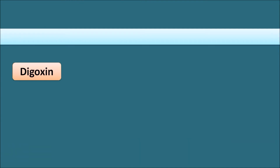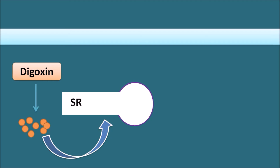Now, at the cellular level, Digoxin increases intracellular calcium levels through inhibition of the sodium-potassium ATPase pump. These calcium ions are stored in the sarcoplasmic reticulum, which acts as a calcium storage site within the cardiac cell. The sarcoplasmic reticulum is equipped with ryanodine receptors. When these ryanodine receptors are activated, they release calcium out of the sarcoplasmic reticulum. In this way, Digoxin increases intracellular calcium stores within the cardiac membrane.